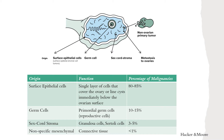In terms of percentage of overall makeup, surface epithelial cells are the most common, typically presenting at a much later stage like stage 3 or stage 4, and make up 80 to 85 percent of all ovarian malignancies. Germ cells make up 10 to 15 percent, with some resources citing 20 to 25 percent. Sex cord stromal cells make up about 3 to 5 percent, and nonspecific mesenchymal cells are less than 1 percent.